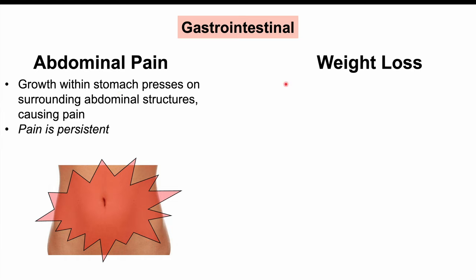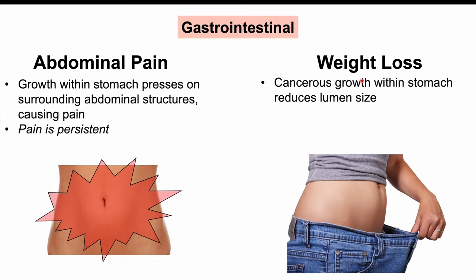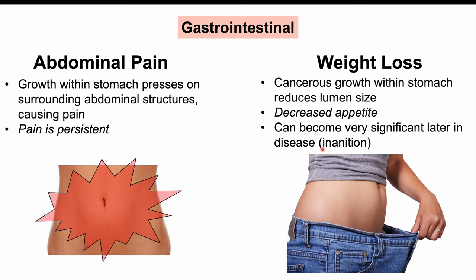Another important symptom is weight loss. Due to the cancer's growth within the stomach, the stomach lumen reduces in size, leading to a decreased appetite. The patient doesn't feel very hungry, eats less, and loses weight over many months. This is a nonspecific, unintentional weight loss, also caused by the cancer diverting nutrients away from the patient. Later in the disease this can lead to severe fatigue and inanition — extreme fatigue and low energy due to being very thin and malnourished.